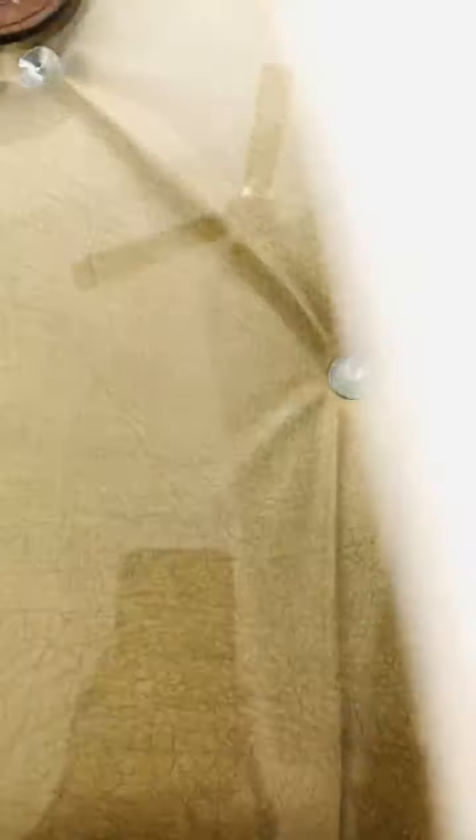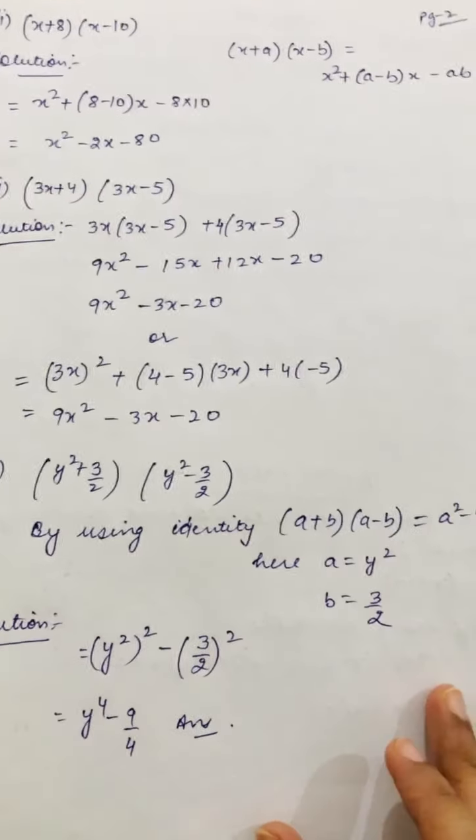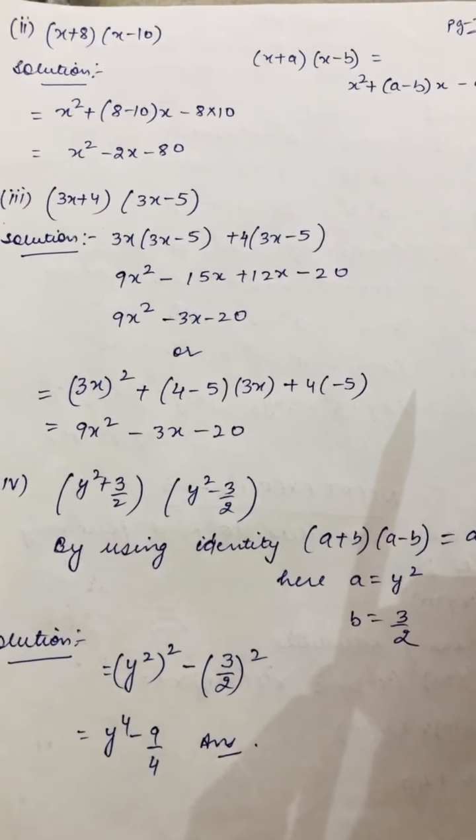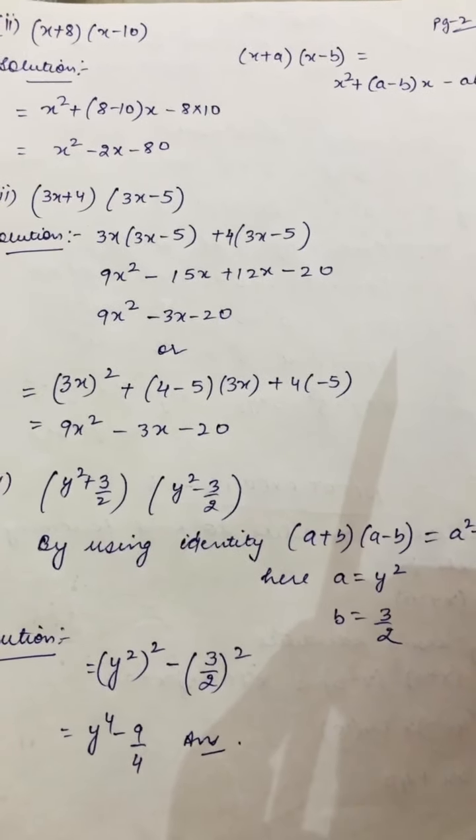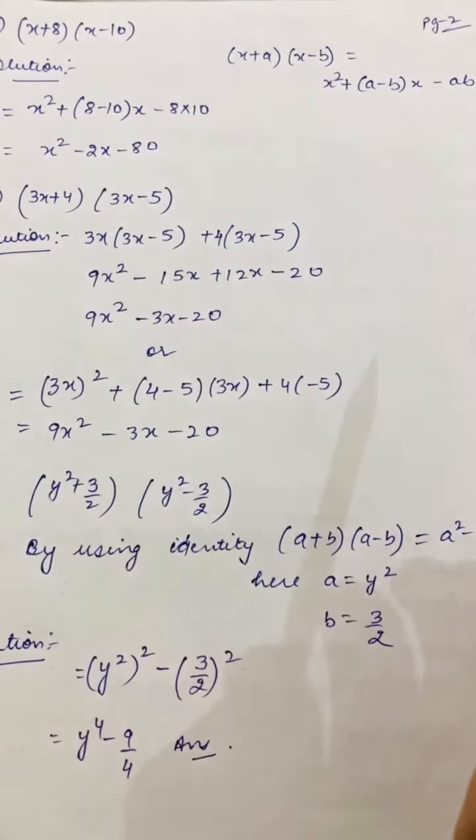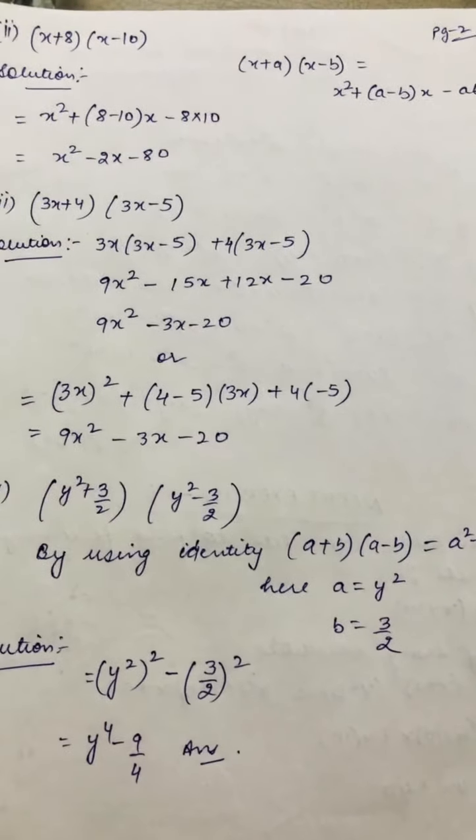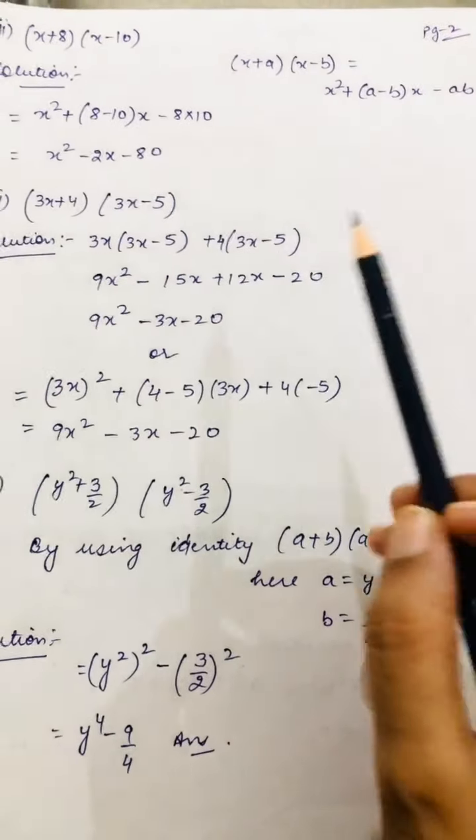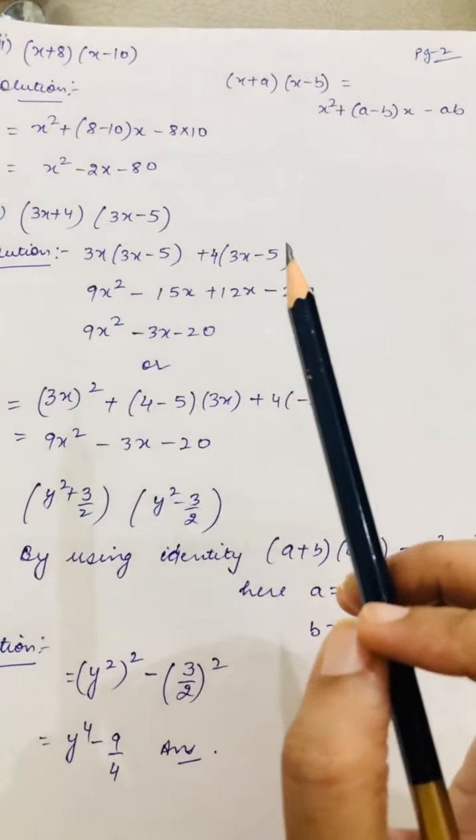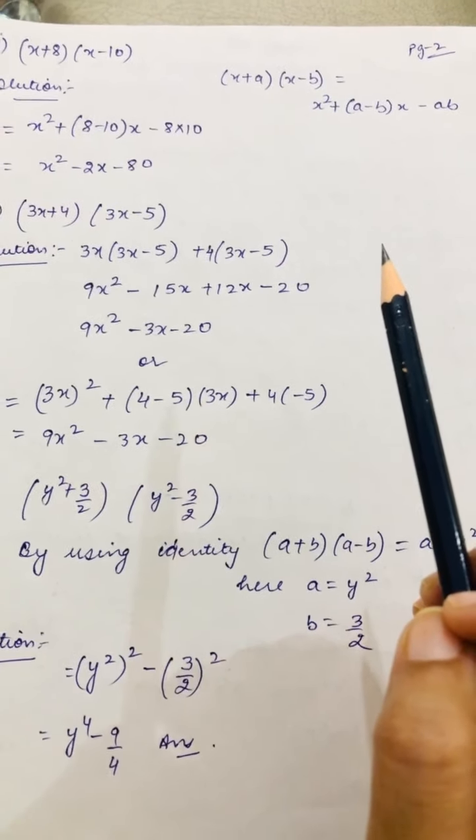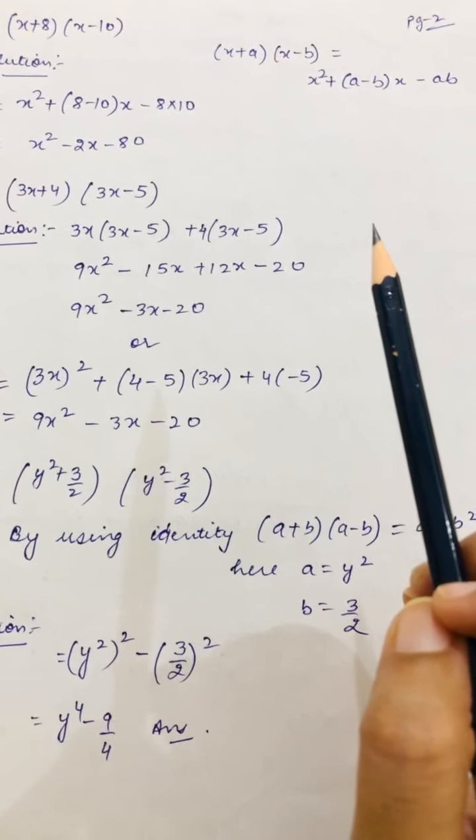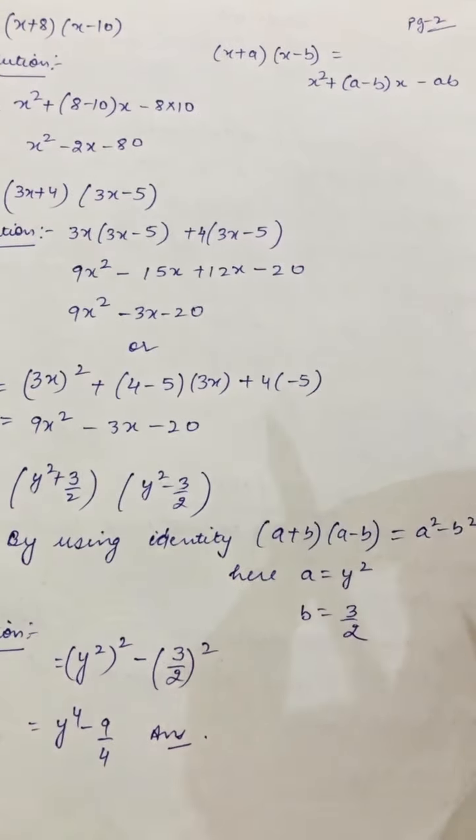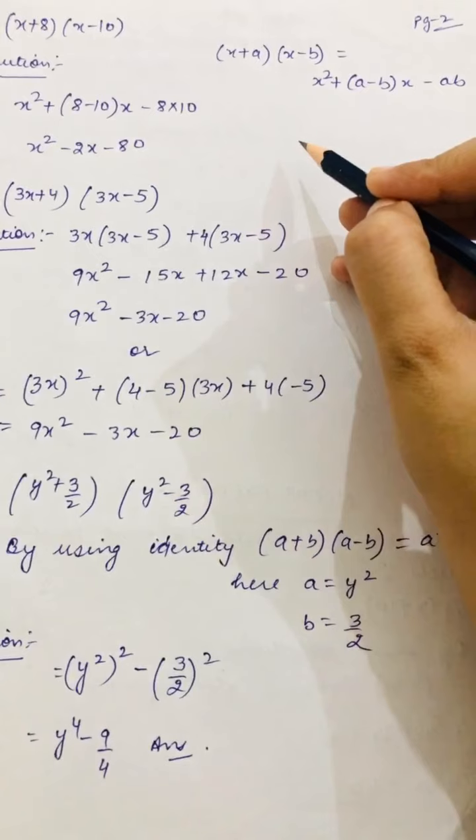Now next, the second part here. What is in the second part? (x+8)(x-10). Here minus formula came. So the formula will remain the same, formula won't change. Where you used to do plus b, there you will do minus b. So what will it become? x².